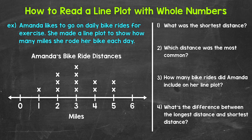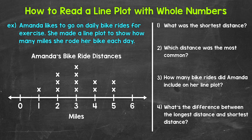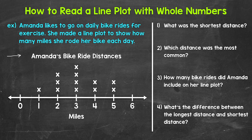Let's jump into our first example where we have a line plot and four questions to see if we can read and understand it. Amanda likes to go on daily bike rides for exercise. She made a line plot to show how many miles she rode her bike each day. Looking at the line plot, we have a title up top that tells us what the line plot is about — Amanda's bike ride distances.